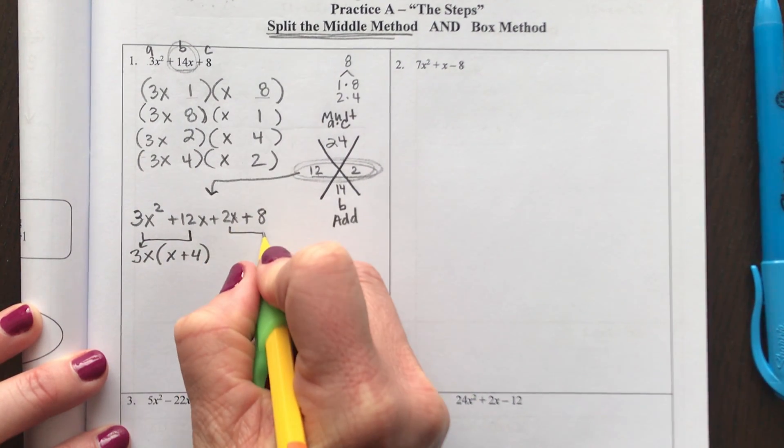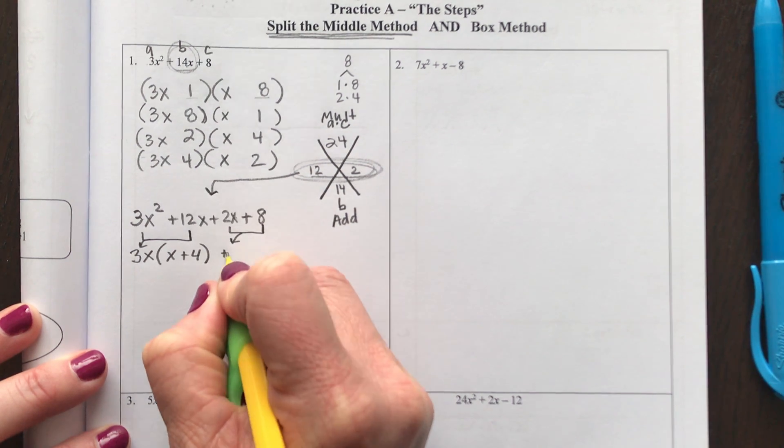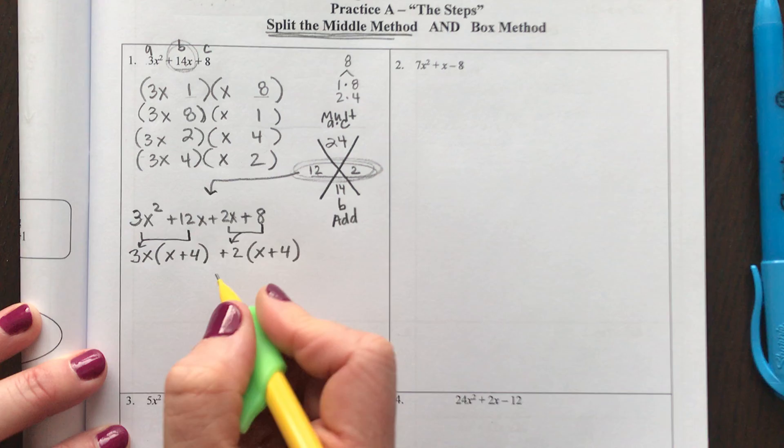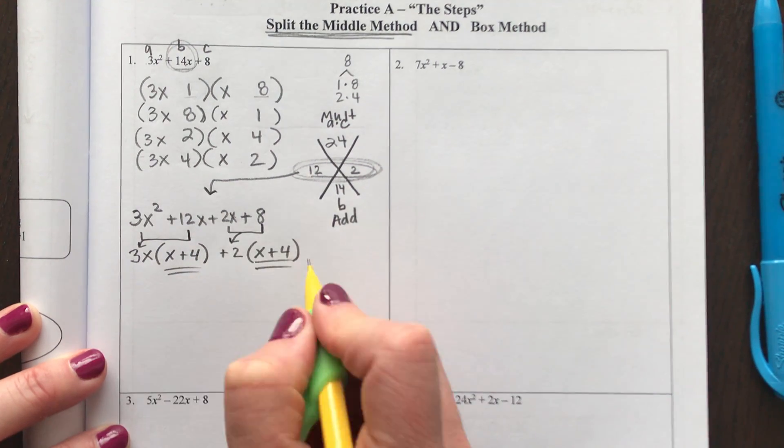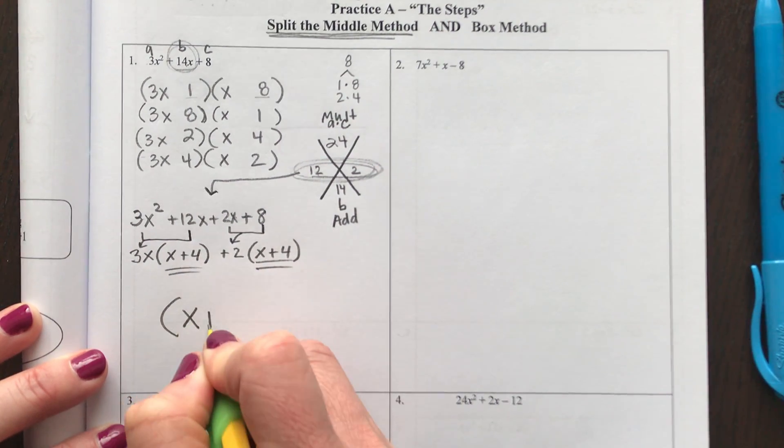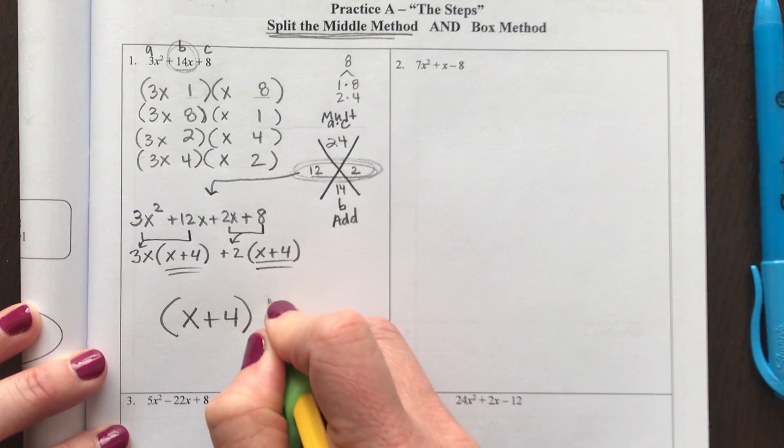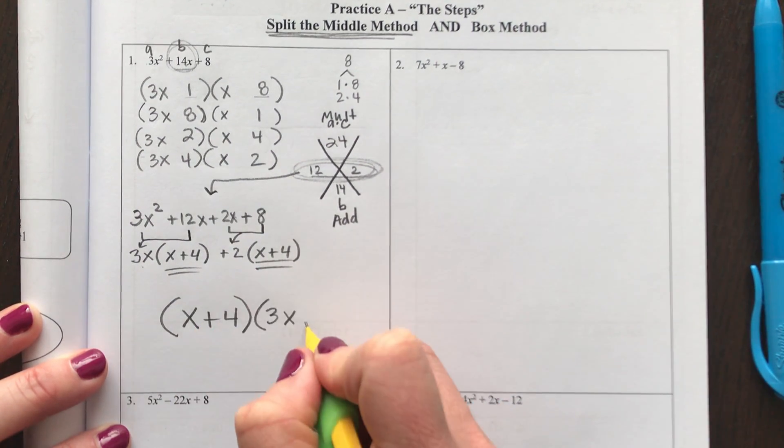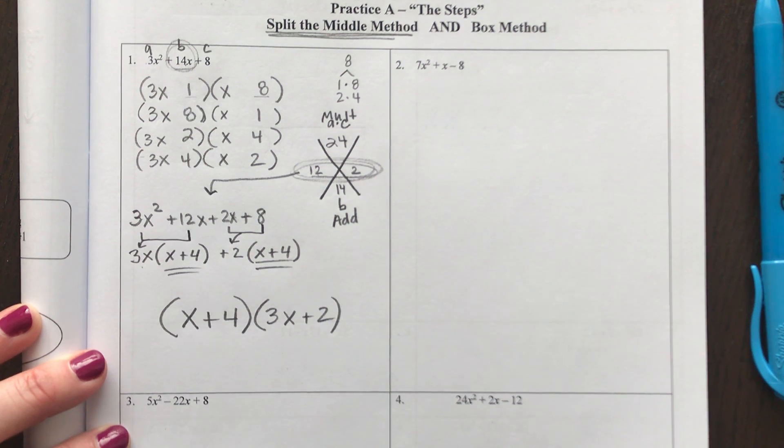Now my last two terms are both even and both divisible by 2. So I'm going to divide both of those by 2. And now what happens is when these match, that is one of your factor pairs. And the GCFs that you had pulled out, the 3x in the front and the 2 in the back, that makes your other factor pair.